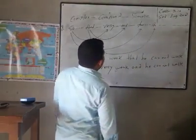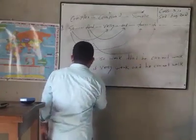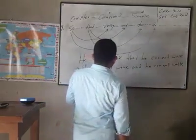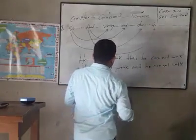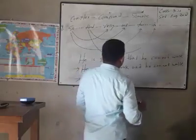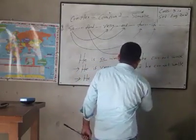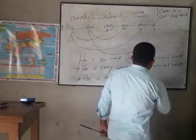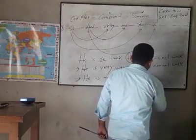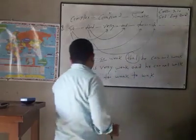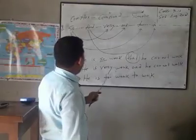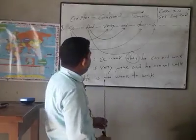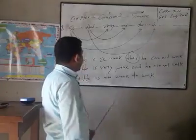Our question was: 'He is so weak that he cannot work.' In compound sentence I have written: 'He is very weak and he cannot work.' And in simple sentence I have written: 'He is too weak to work.' I think you have understood it very easily because I have presented it in an easy way.